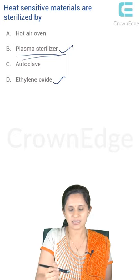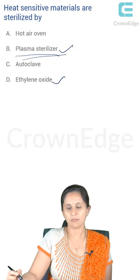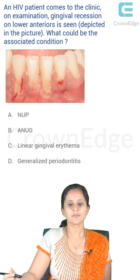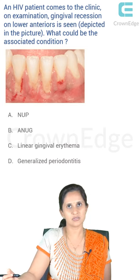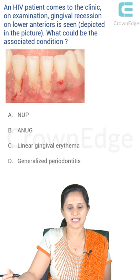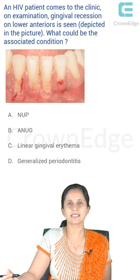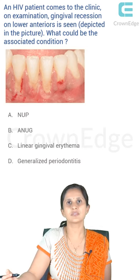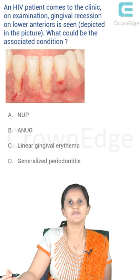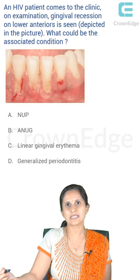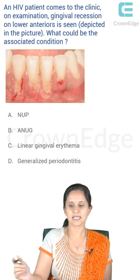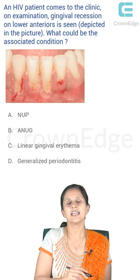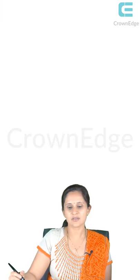The next question involves an HIV patient who comes to the clinic. On examination, gingival recession is seen on the lower anterior teeth, as depicted in the picture. Thinking of gingival recession, the periodontium is affected, and the answer for this is necrotizing ulcerative periodontitis.